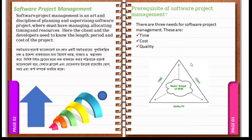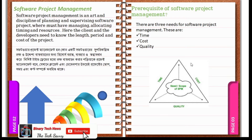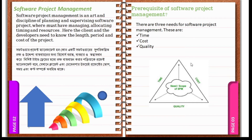So, what is software project management? Software project management is an art and discipline of planning and supervising a software project, which must involve managing and allocating time and resources, where the client and developer need to know the length, period, and cost of the project.